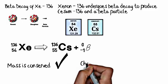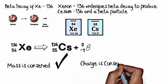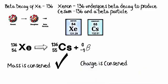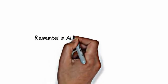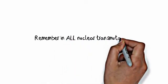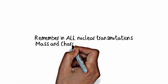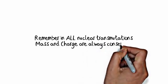Mass is the top number. And charge is conserved because the charges are the same. 54 equals 55 minus 1. They're the same on both sides of the arrow. Whenever you write a nuclear transmutation out, you have to conserve mass and charge. Mass and charge are always conserved.